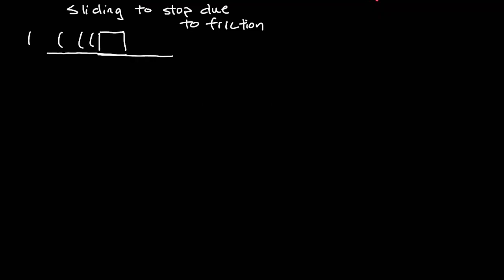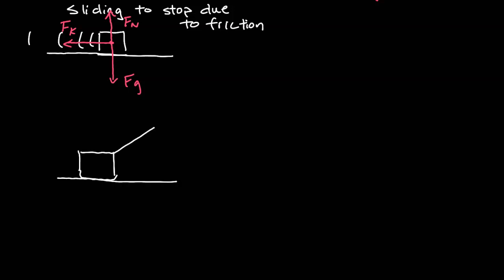Here we have a box sliding to a stop due to friction — it's moving to the right. First I draw gravity force, then normal force, and then because there is friction and the object is moving, I know there has to be kinetic friction to the left. Kinetic friction is in the opposite direction that the object is moving relative to the surface.